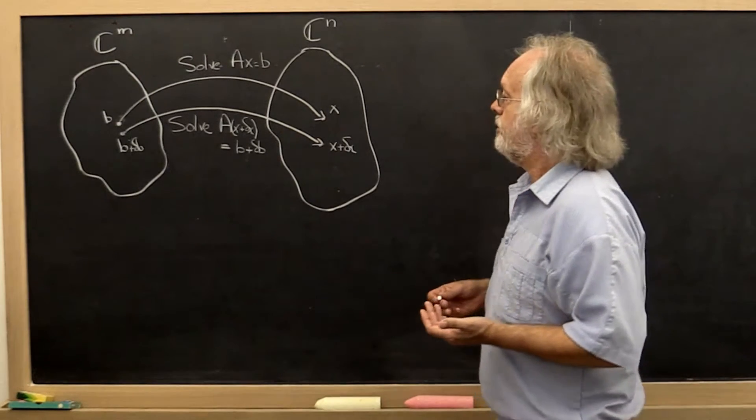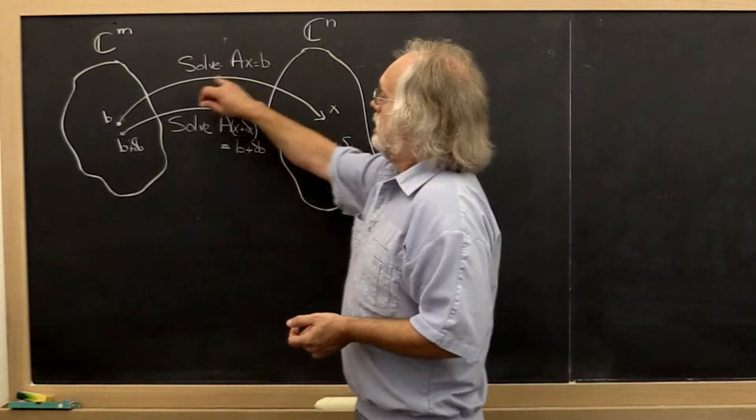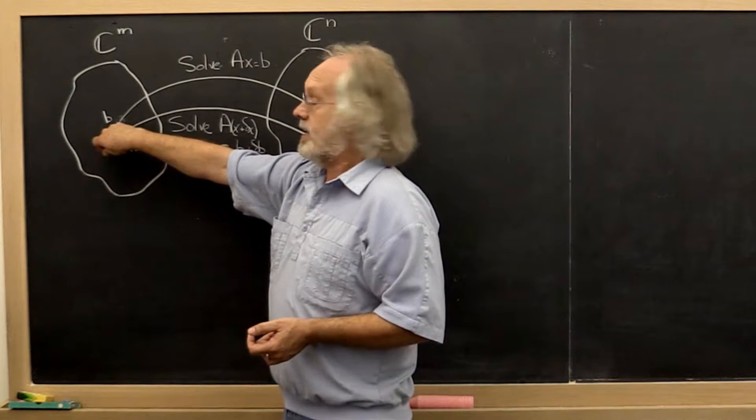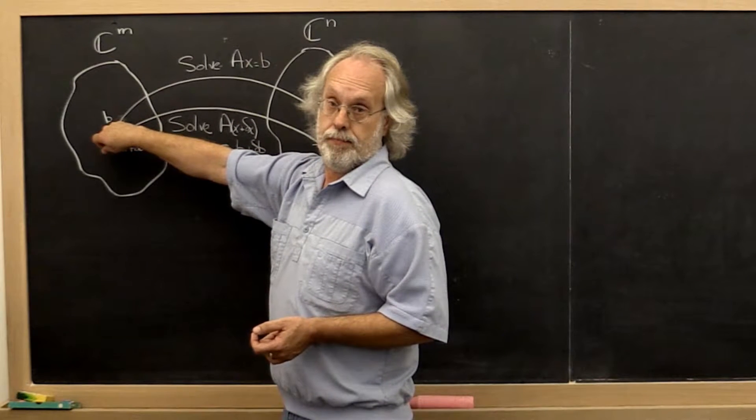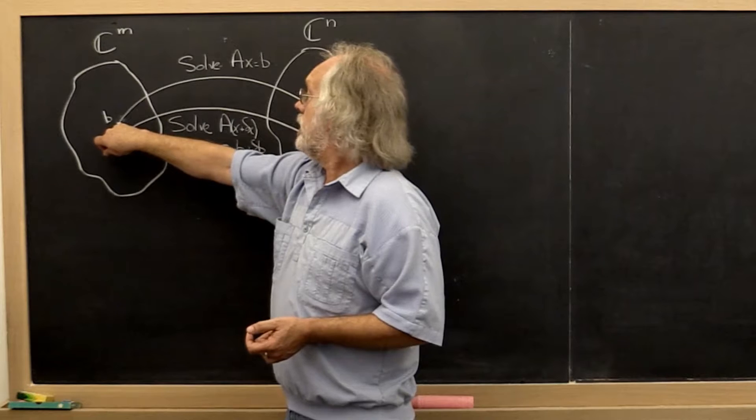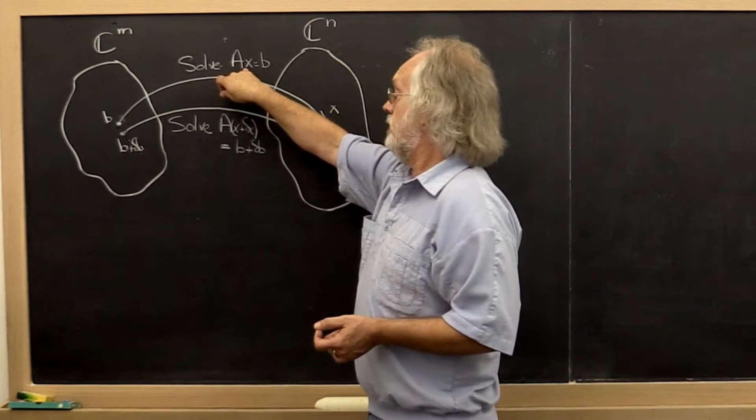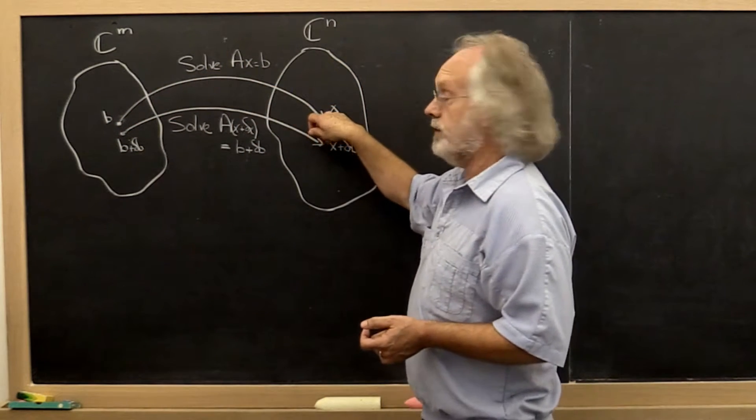In other words, it has an inverse. You start with a right-hand side B. That's the input. You solve Ax equals B. That gives you an output vector x, the solution.